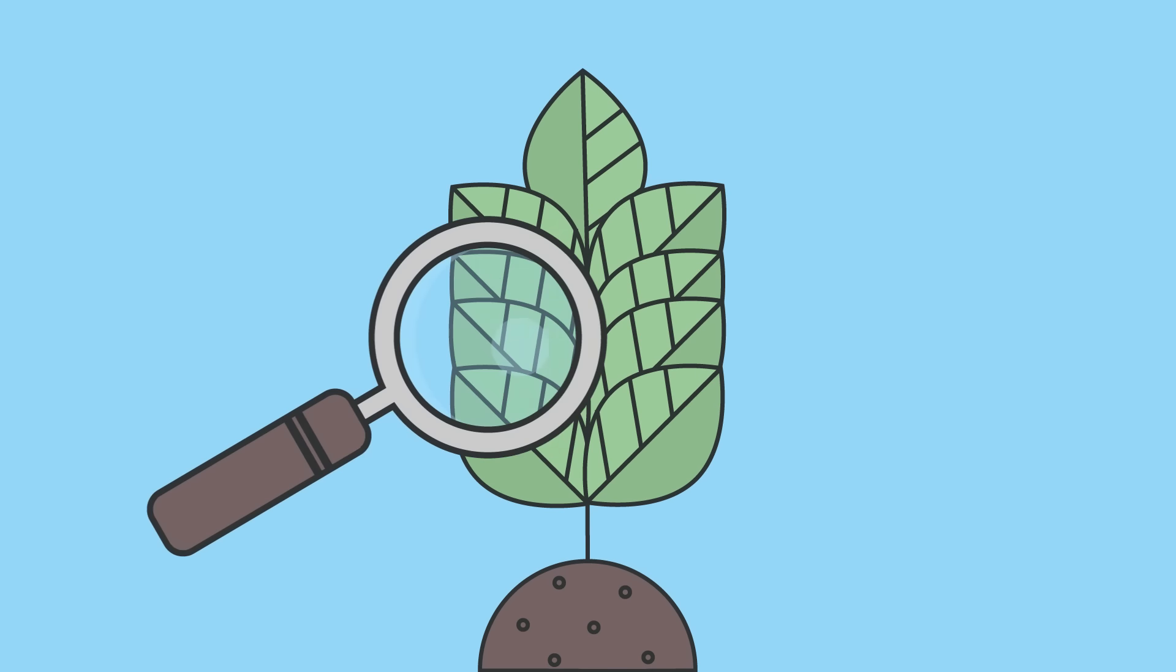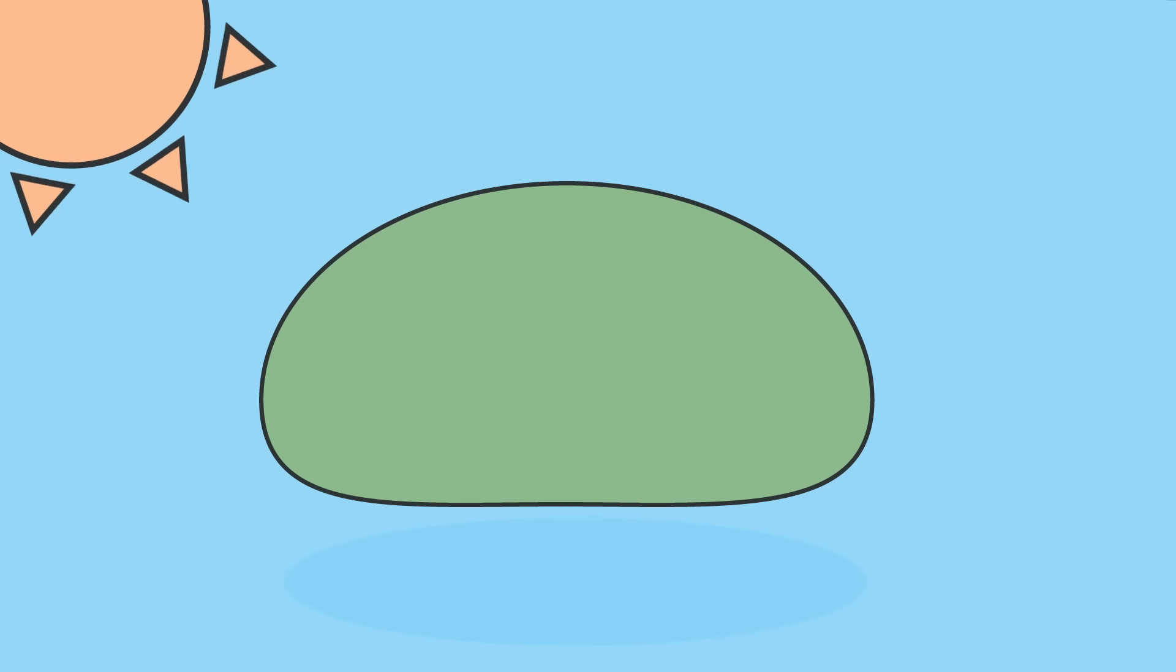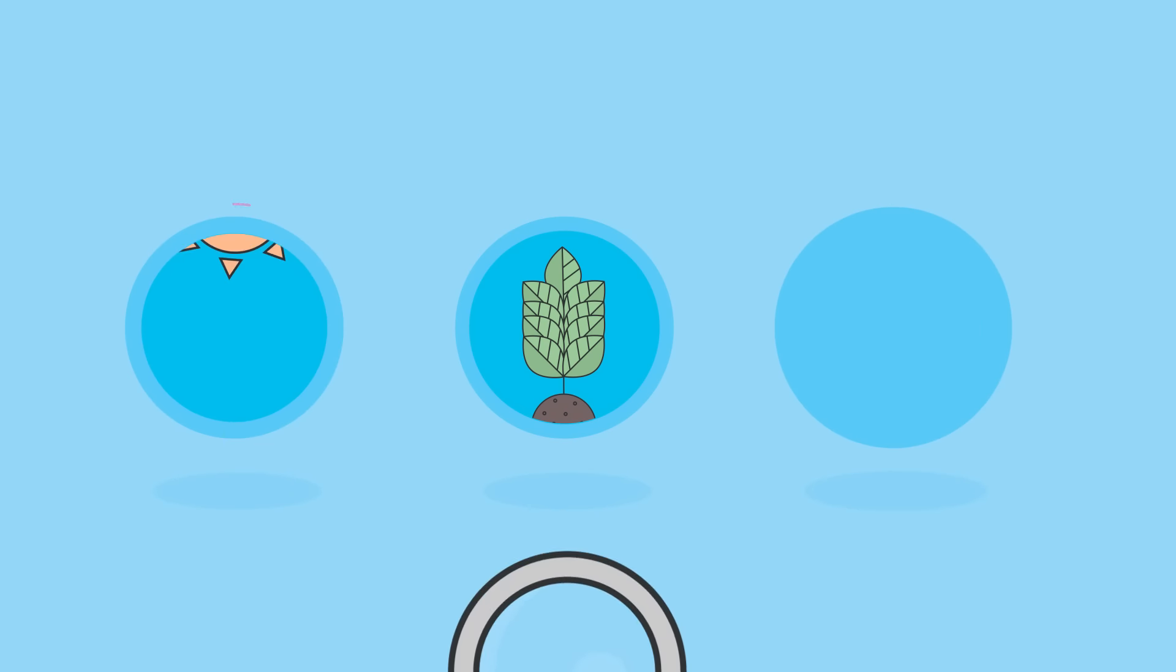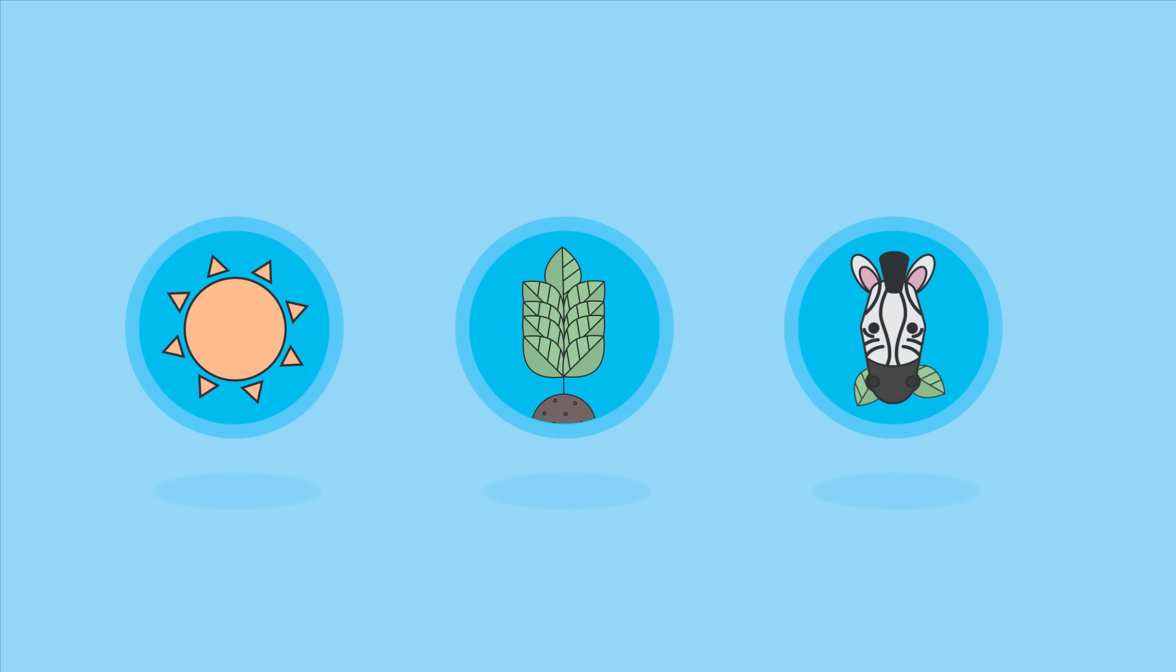The food chain begins with an organism that can utilize this energy directly to make its own food. The arrows in the food chain follow the flow of energy, so they always go from the food and point to the feeder.